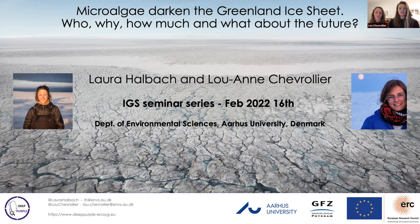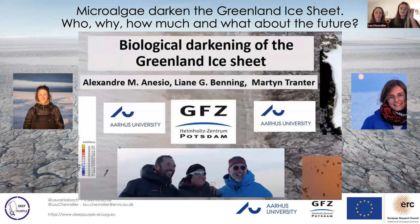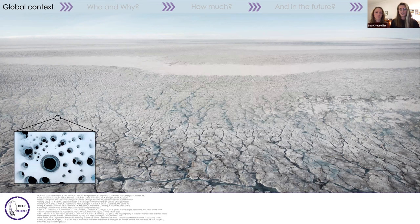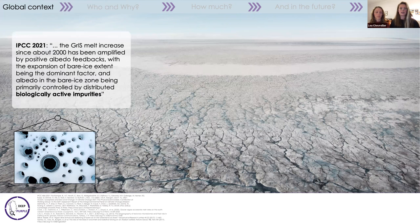If you want more details or background information, the PIs of Deep Purple gave a talk last year that is available on the IGS YouTube channel. We've known for a long time that snow and ice surfaces can darken from the presence of light-absorbing particulates that can be deposited, outcrop, or grow at the surface. On snow, the focus has been put on black carbon and dust, whilst on bare ice, black cryoconite holes have received particular attention. Recent research also highlighted the role of microalgae blooming at the surface in lowering the surface albedo.